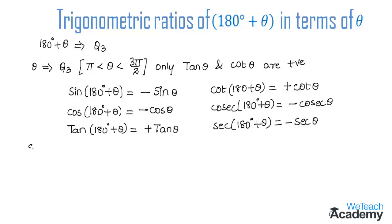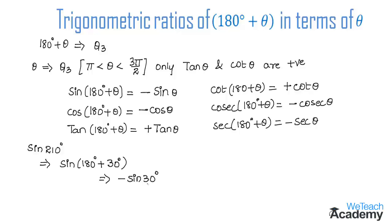The first example is: find the value of sine 210 degrees. We can write this as sine(180° + 30°), which is in the form sine(180° + θ) = −sin θ. So we get −sin 30°. The value of sin 30° is 1/2, so the result is −1/2.